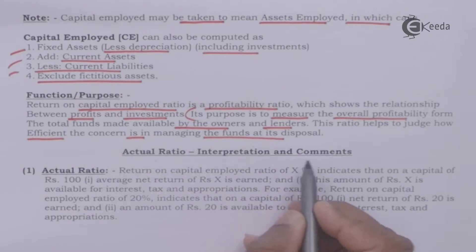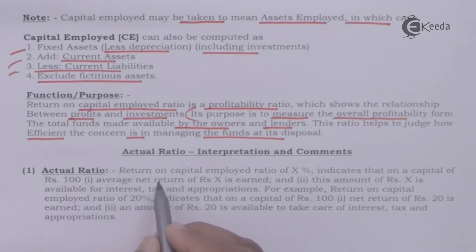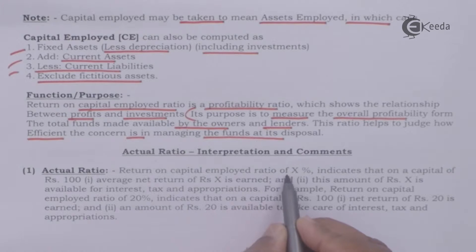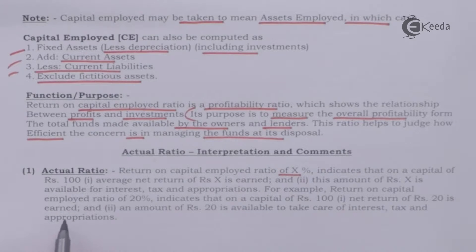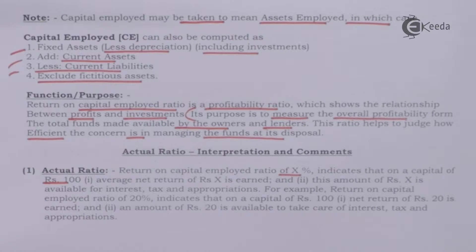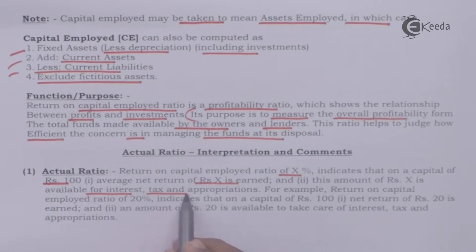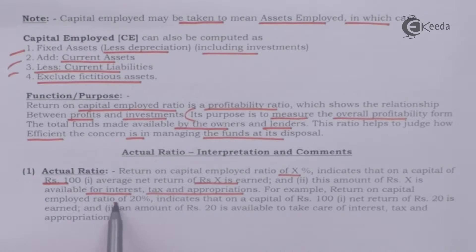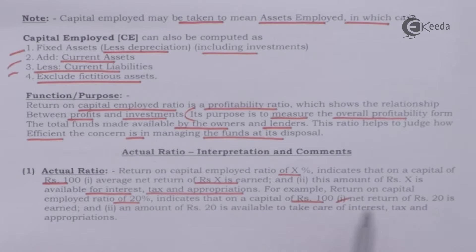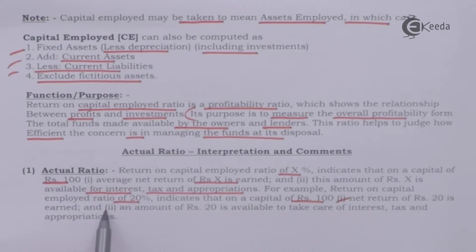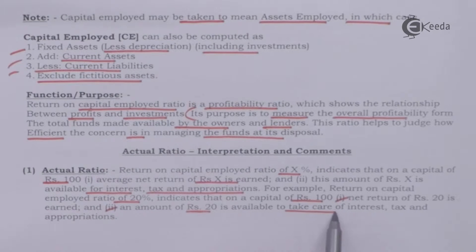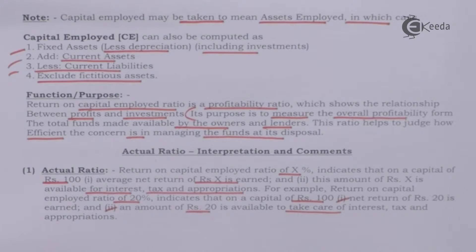Actual ratio interpretation: A return on capital employed of X percent indicates that on a capital of Rs. 100, average net returns of Rs. X are earned, and this amount is available for interest, tax and appropriation. For example, a return on capital employed of 20% indicates that on a capital of Rs. 100, a net return of Rs. 20 is earned and is available to take care of interest, tax and appropriations.